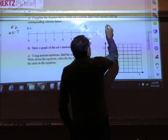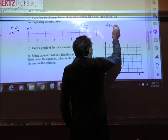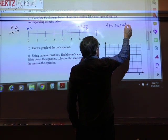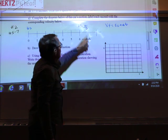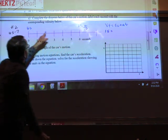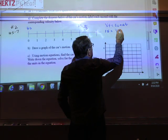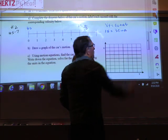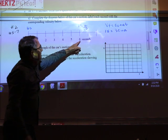If I use an equation, the final velocity, 15. Initial velocity, 30. I don't know acceleration, A. Time is six.